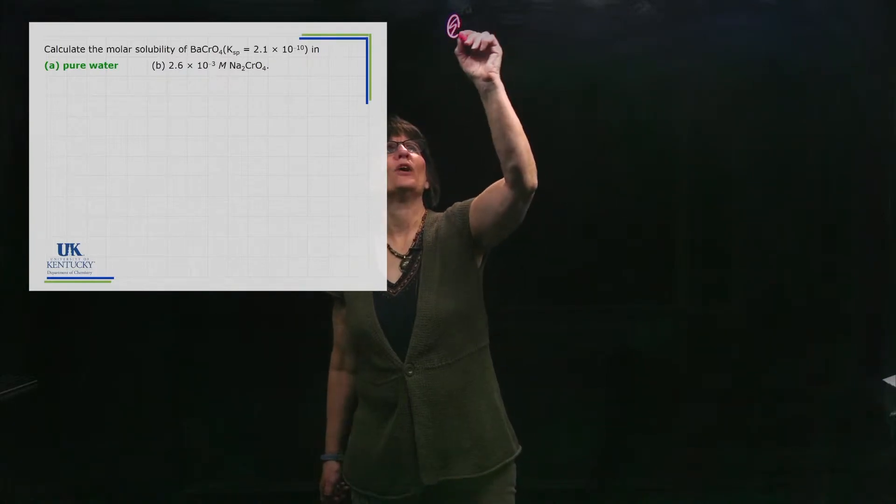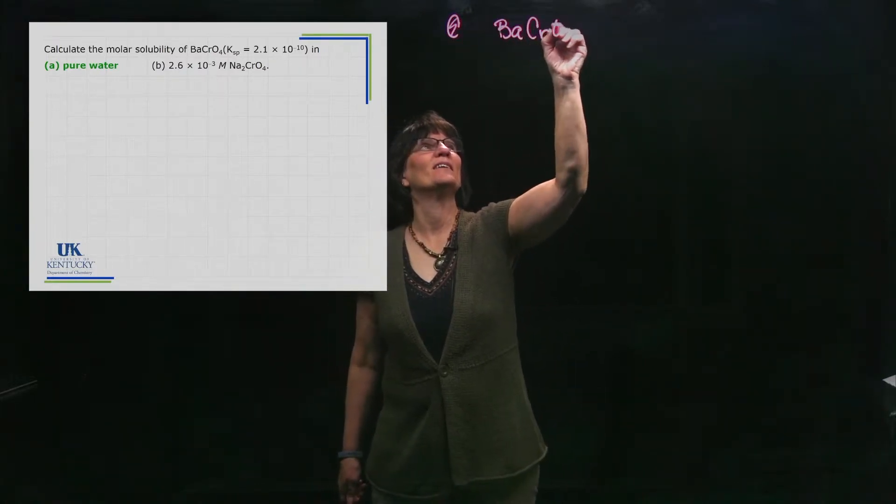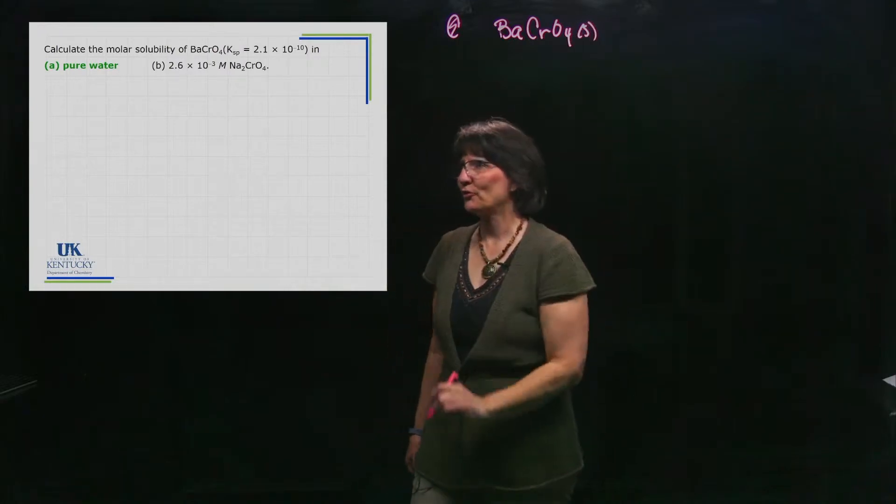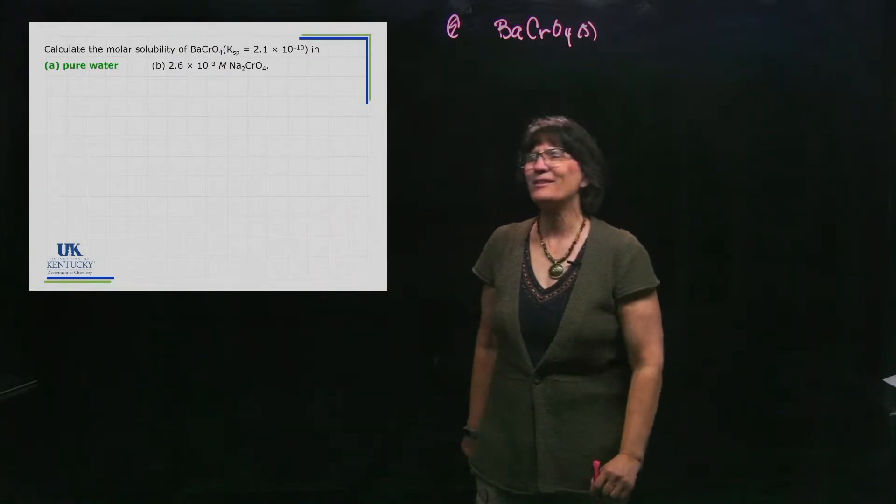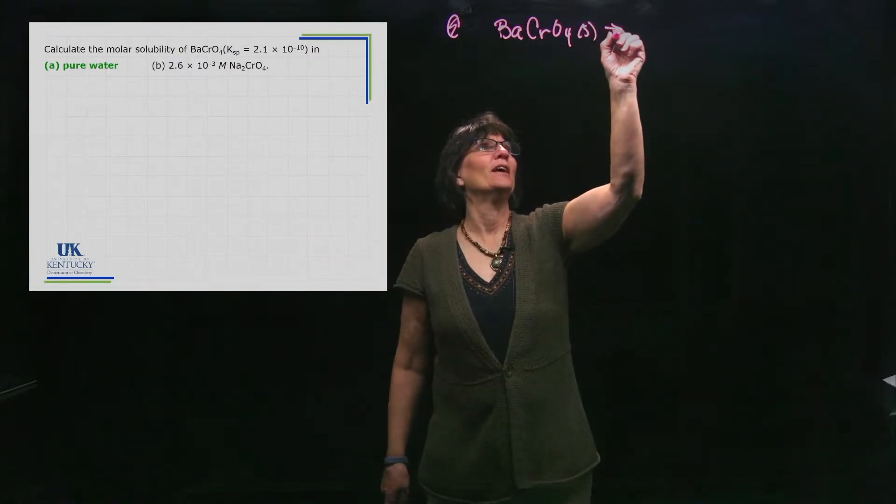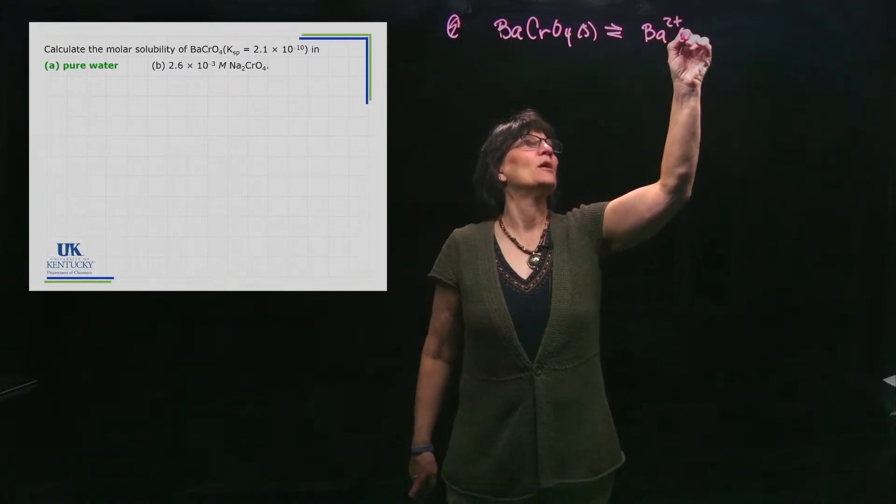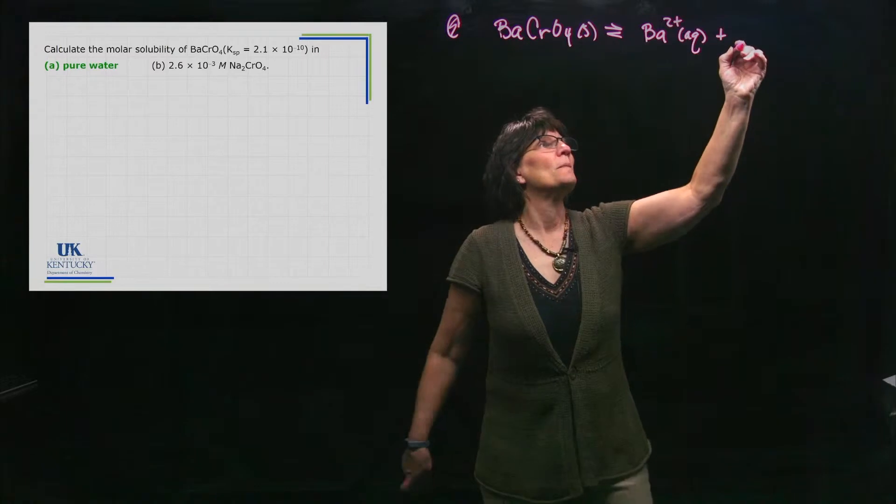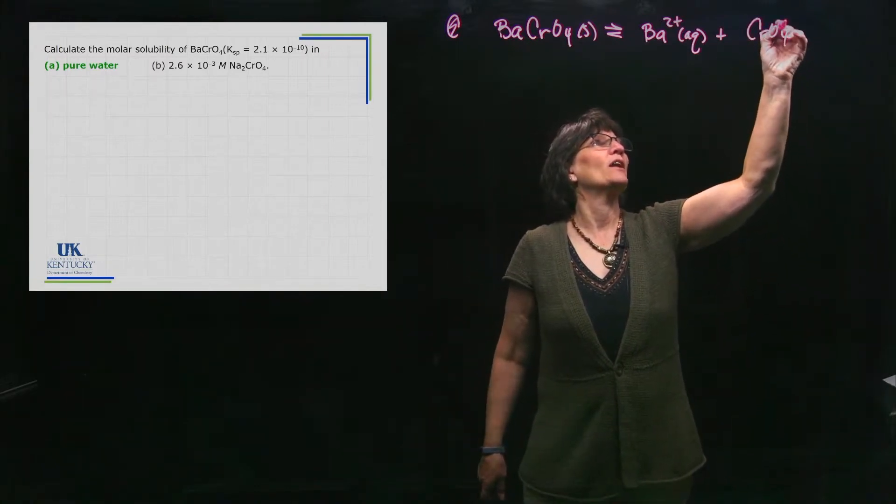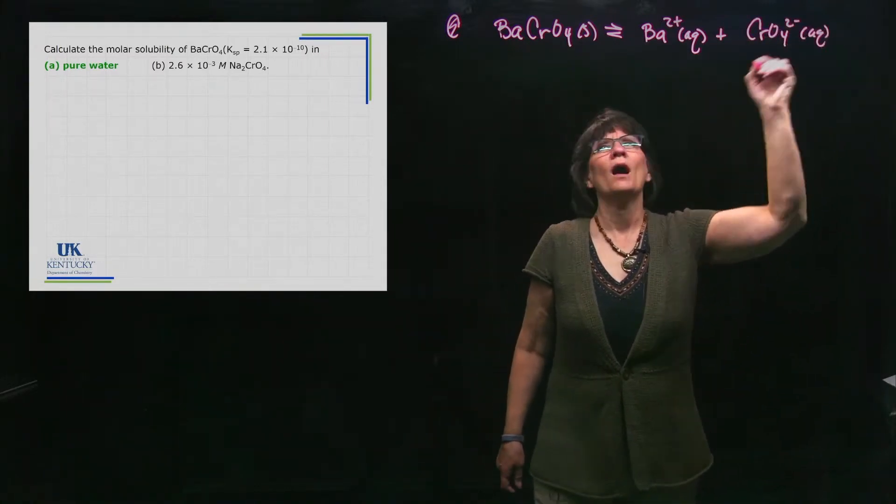This is a fairly straightforward problem. Oops, I don't know why I'm writing calcium. We'll try again: barium chromate. It is the insoluble salt. It's easy to know it's insoluble because they gave me a Ksp value for it. That's a dead giveaway. It'll break apart into the two ions. Barium has a plus two charge, chromate has a two minus charge.